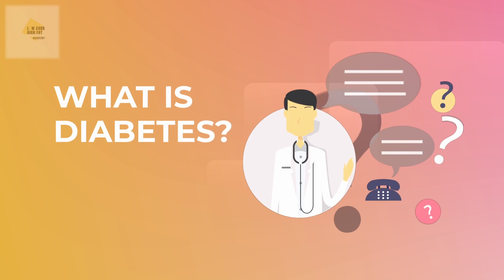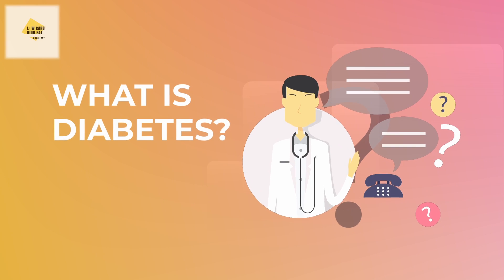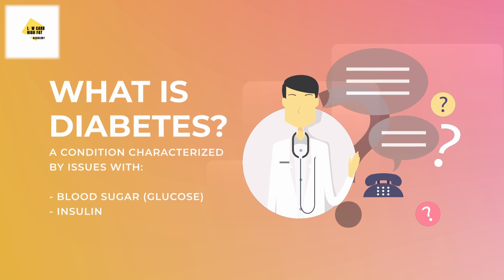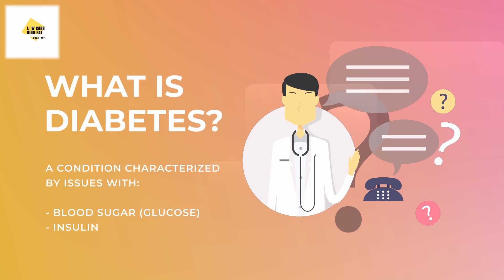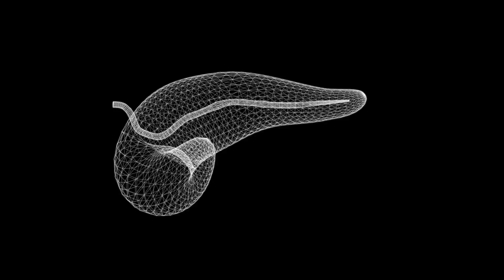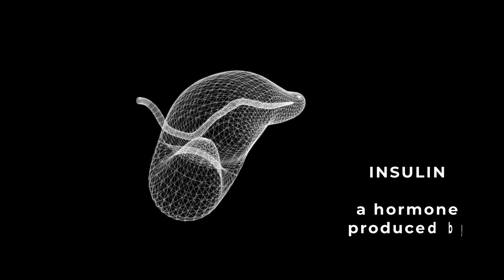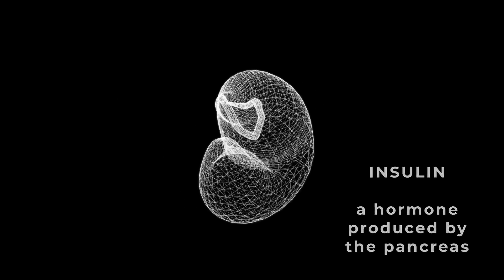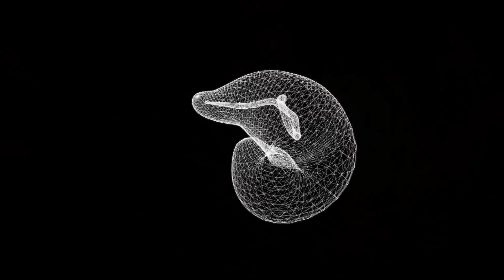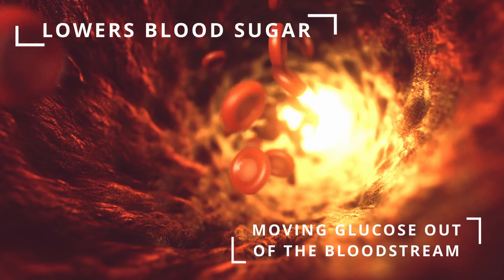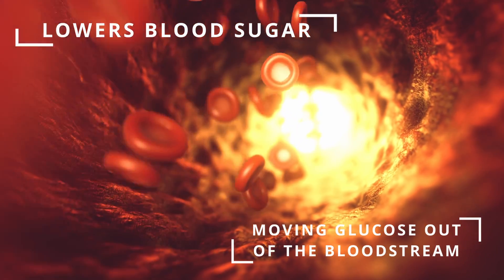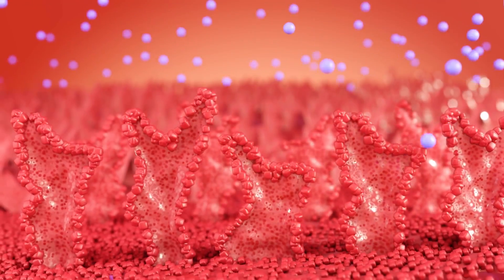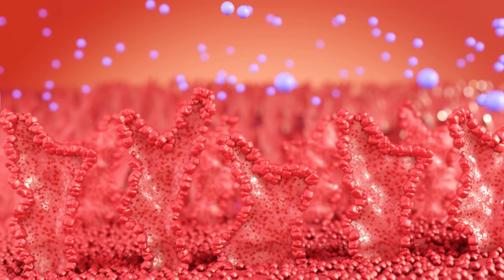What is diabetes? Diabetes is a condition characterized by issues with blood sugar, glucose, and insulin. Insulin, a hormone produced by the pancreas, lowers blood sugar levels by moving glucose out of the bloodstream and into the body's cells. With diabetes, there is a problem with either the production or utilization of insulin.